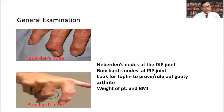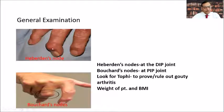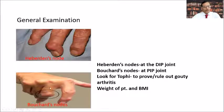On general examination, one must look for Heberden's nodes and Bouchard's nodes. Heberden's nodes are seen at the DIP joint, and in the proximal interphalangeal joint they are called Bouchard's nodes.